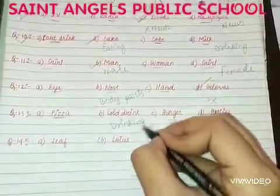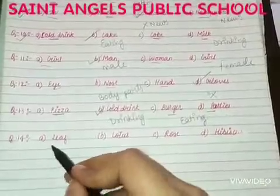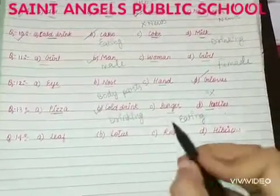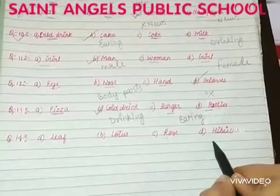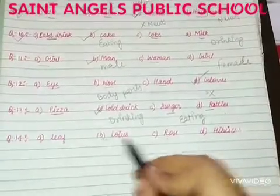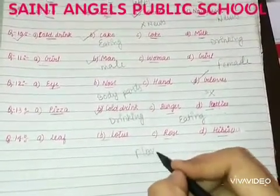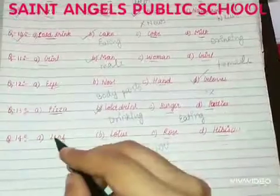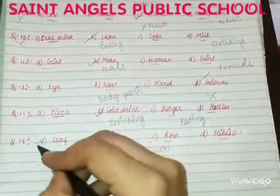In question 14, Option A is leaf, Option B is lotus, Option C is rose, Option D is hibiscus. Option B, C and D are flowers whereas Option A is not a flower. So tick Option A. Thank you.